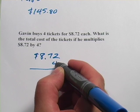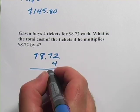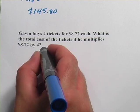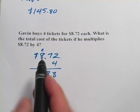We can start multiplying here. 4 times 2 is 8. Nothing to carry. 4 times 7 is 28. The 2 goes up here. And 4 times 8 is 32 plus 2 is 34.